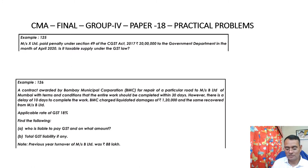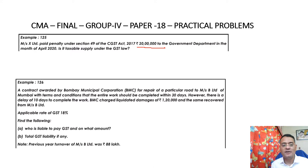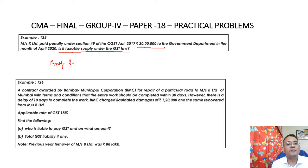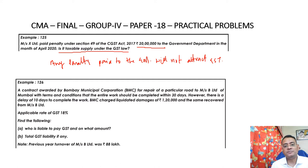The first problem: Measures X Limited paid a penalty under Section 49 of the CGST Act 2017 of Rs. 20 lakhs to the government department in the month of April 2020. Is it a taxable supply under GST law? Please note that any penalty paid to the government will not attract GST, since there is no supply. So GST will not be applicable in this case.